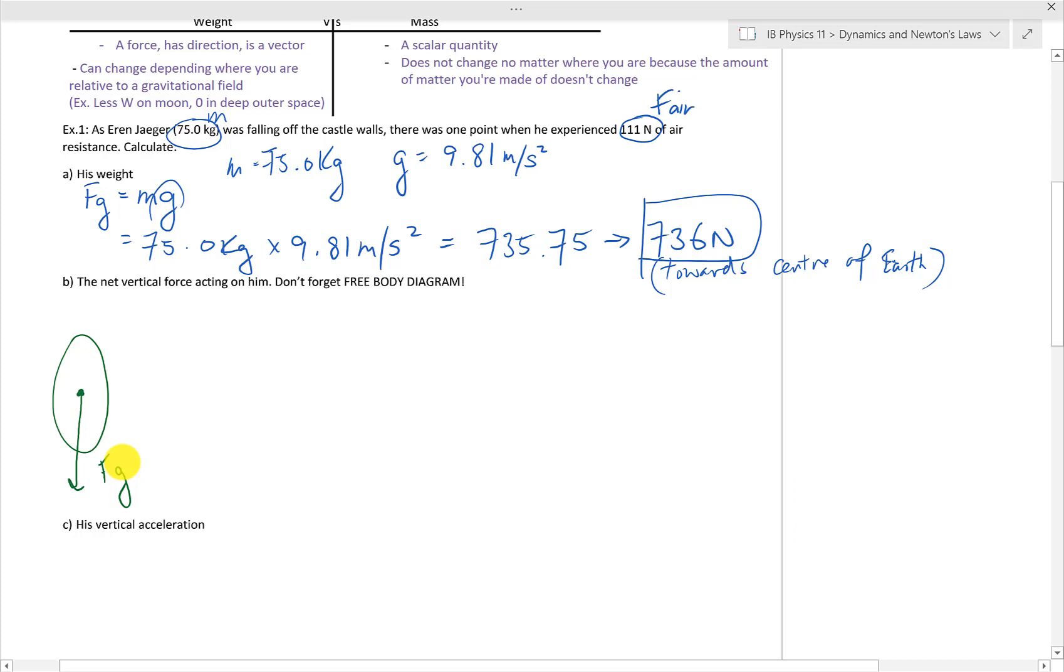We have the acceleration due to gravity, which we found out is 735.375, no rounding. Air resistance is in the upwards direction when he's falling downwards. And that is 111 newtons.